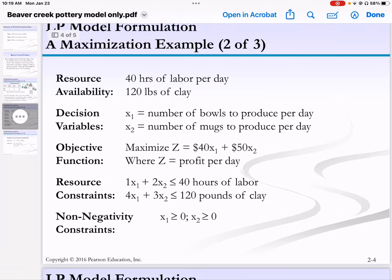So our labor constraint is 1 times X1 plus 2 times X2 - one hour per bowl plus two hours per mug. And we only have 40 hours, so it needs to be less than or equal to 40.